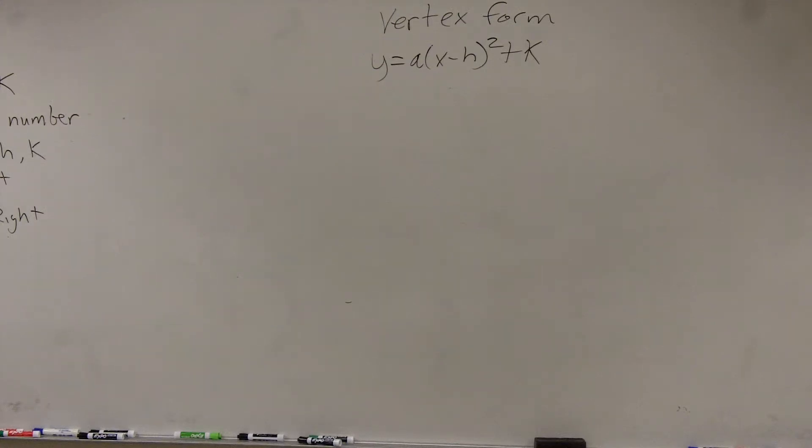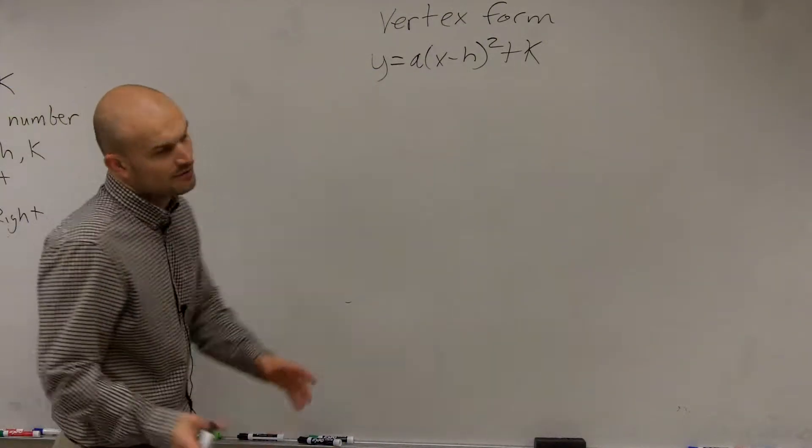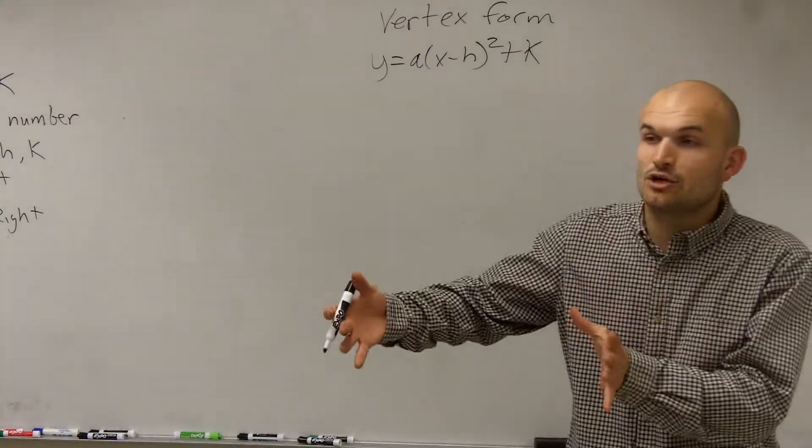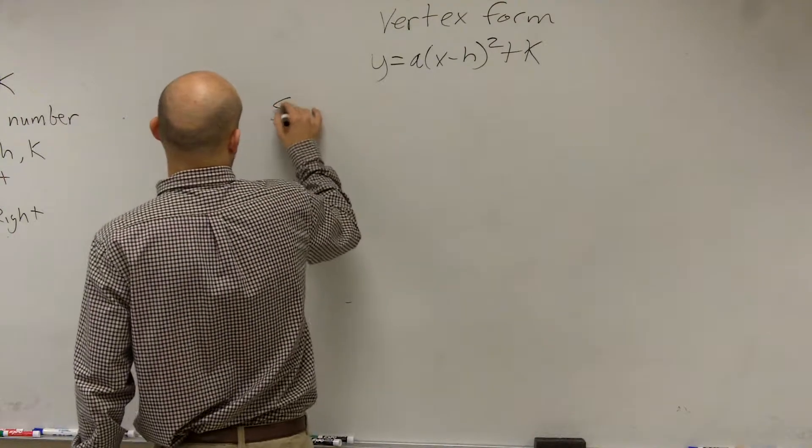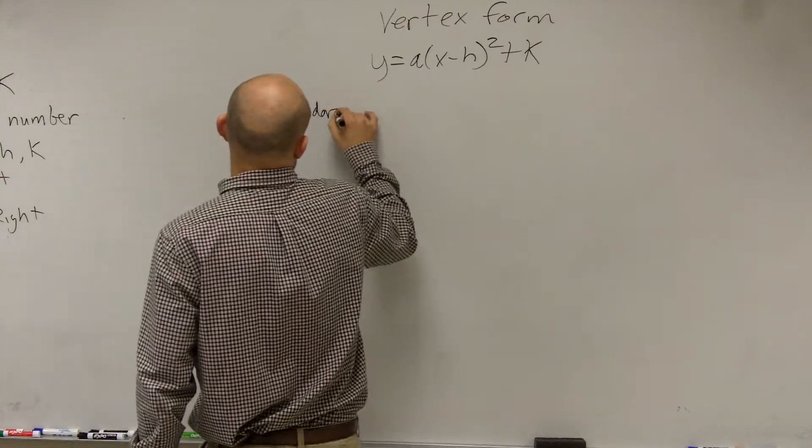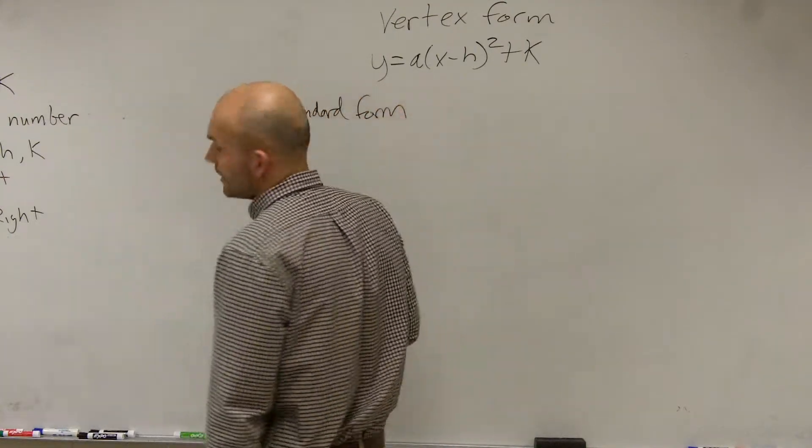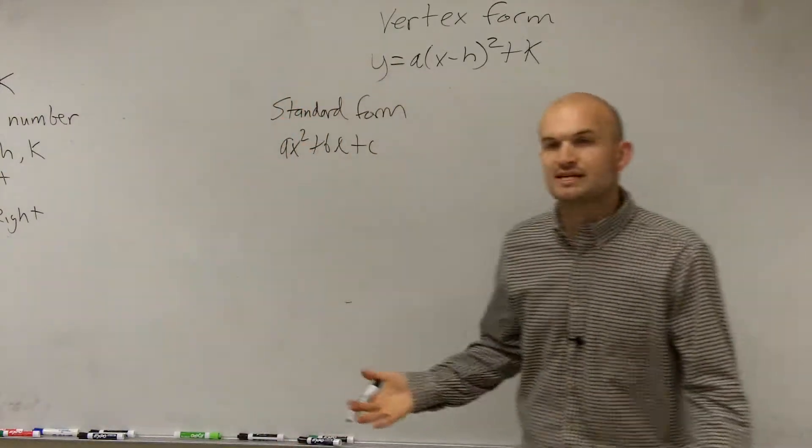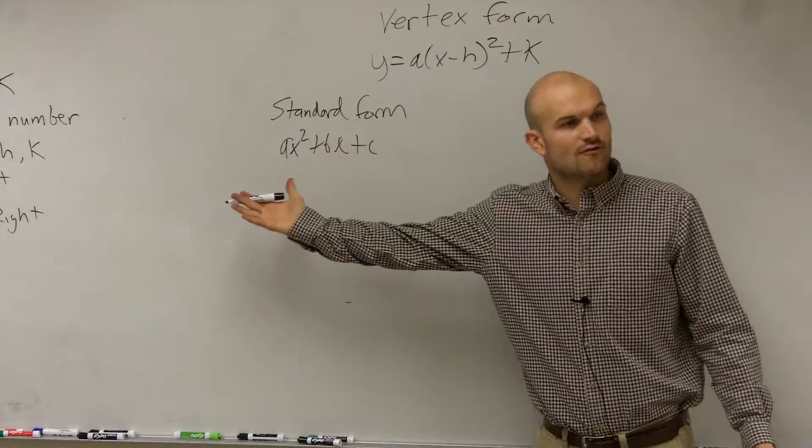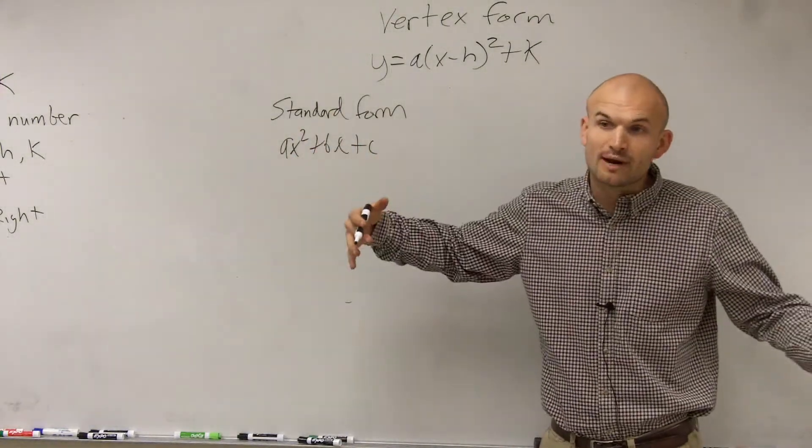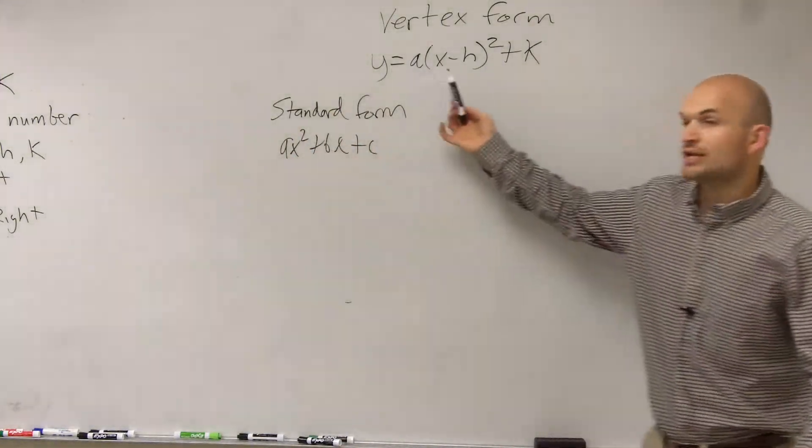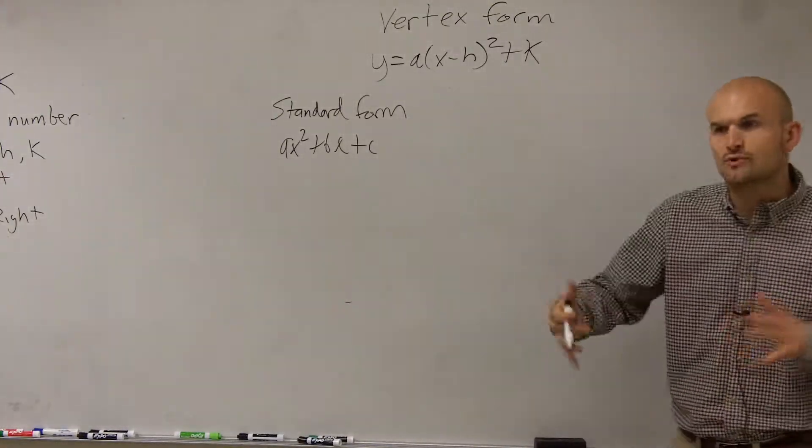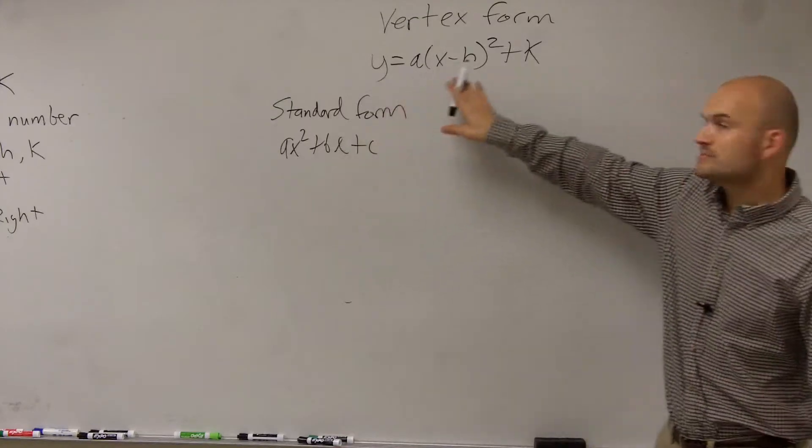OK. So ladies and gentlemen, what we did last example is we worked from taking an equation that was in this format. This is what we call standard form. In standard form was ax squared plus bx plus c. So what we did is we took an equation that was in standard form, and by completing the square, we wrote it into vertex form. You just follow the same process of completing the square, but then you go from standard form to vertex form.